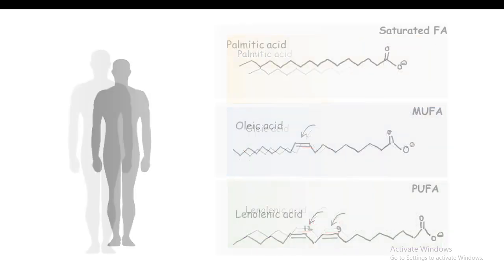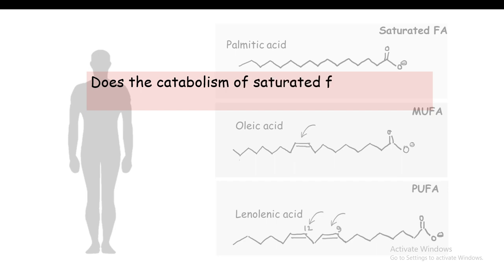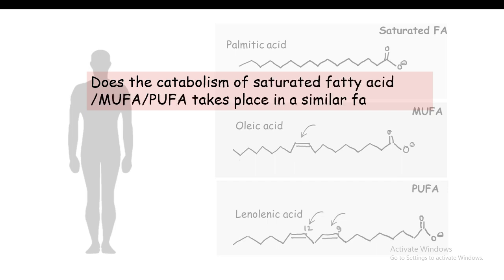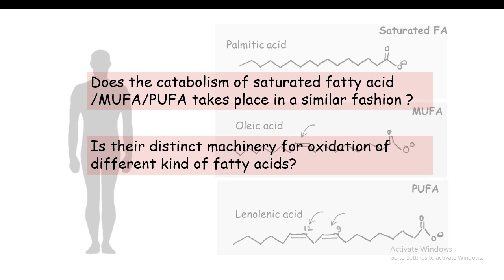When trying to understand this process, we should ask two questions. First, does catabolism of saturated and unsaturated fatty acids take place in a similar fashion, in a similar place, using similar enzymes? Second, is there a distinct machinery for different subtypes or a universal machinery? The overall machinery is conserved, but the way you oxidize polyunsaturated and monounsaturated fatty acids is a bit different — some special enzymes play a crucial role.